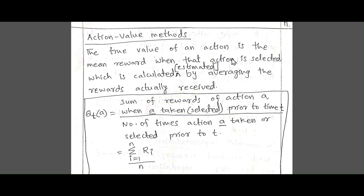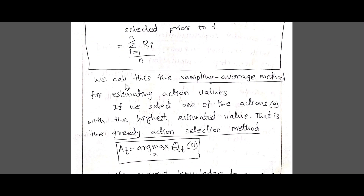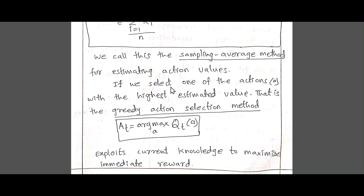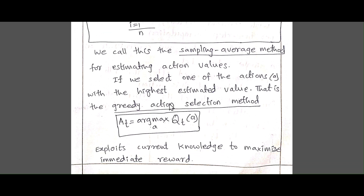Action value methods: the true value of an action is the mean reward. That action is selected which is calculated by averaging the rewards actually received. The action value is defined as the sum of rewards of actions taken divided by how many times that action is selected — this is called the sample average method. If we select the action with the highest estimated value, it is called the greedy action selection method.